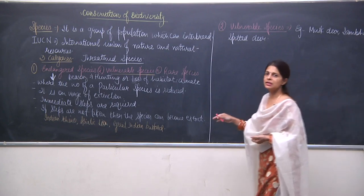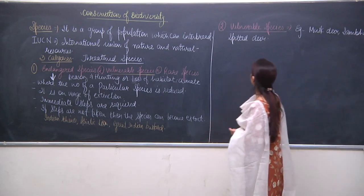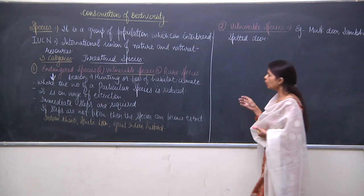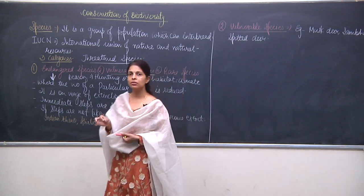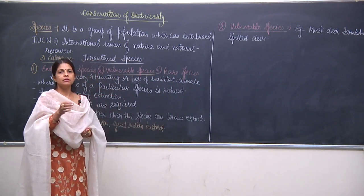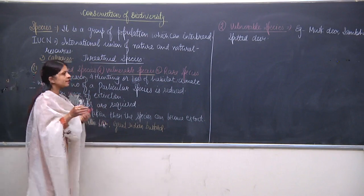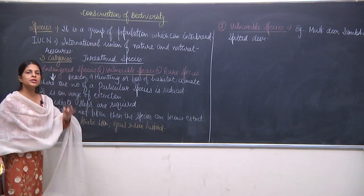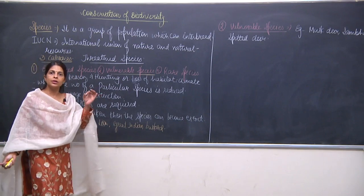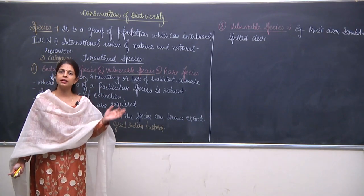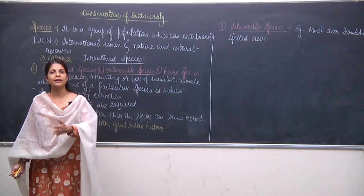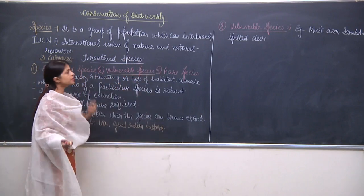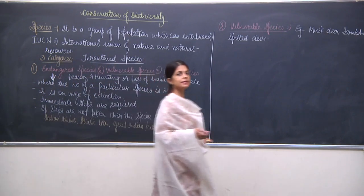Now, when we talk about vulnerable species, the numbers are not very low. Endangered species need immediate help — they are just at the door of extinction and if care is not taken immediately they will become extinct. But vulnerable species can come into the category of endangered species if care is not taken.